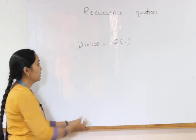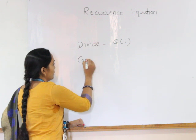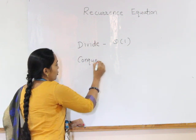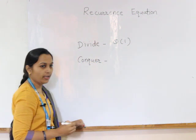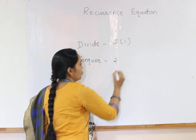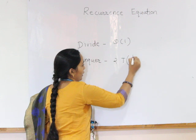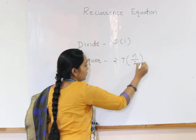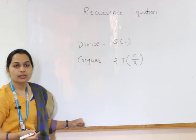The second step is the conquer step. In the conquer step, we have two sub-problems, so it takes 2T of n by 2 time to find the solution.